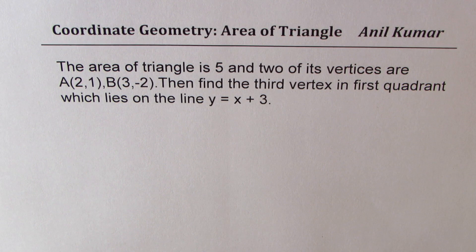The question here is: the area of a triangle is 5 and two of its vertices are A(2,1), B(3,-2). Then find the third vertex in first quadrant which lies on the line y = x + 3.